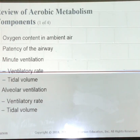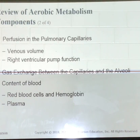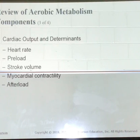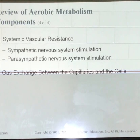Aerobic metabolism requires oxygen. You must have a patent airway, minute ventilation — which is your tidal volume and respiratory rate — and alveolar ventilation. You need perfusion to the pulmonary capillaries and gas exchange between the capillaries and the alveoli. You must have red blood cells with hemoglobin, iron, and plasma. Cardiac output is determined by heart rate, preload, stroke volume, myocardial contractility, afterload, systemic vascular resistance, and gas exchange between the capillaries and the cells.